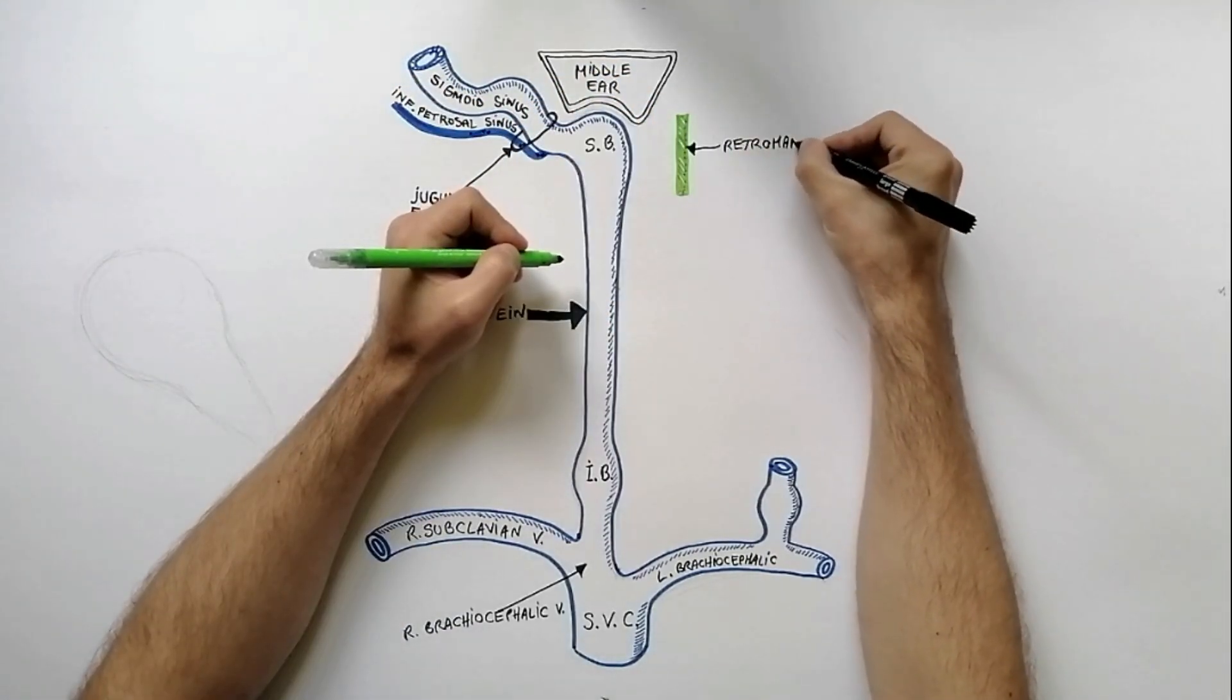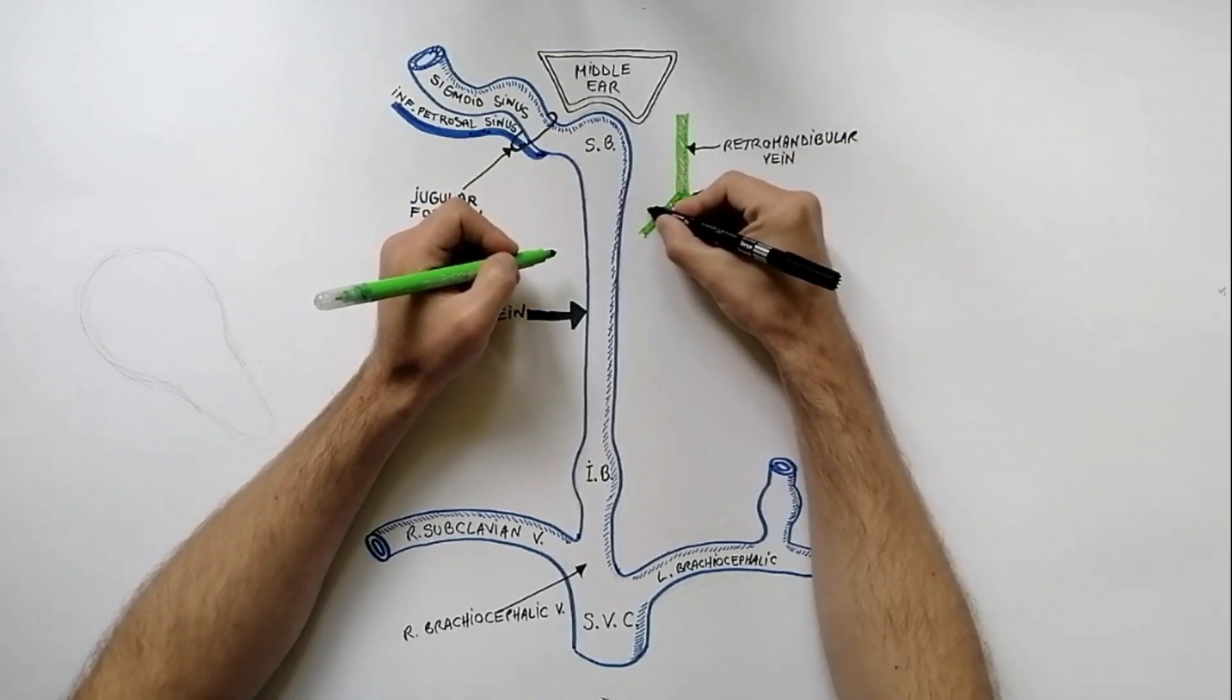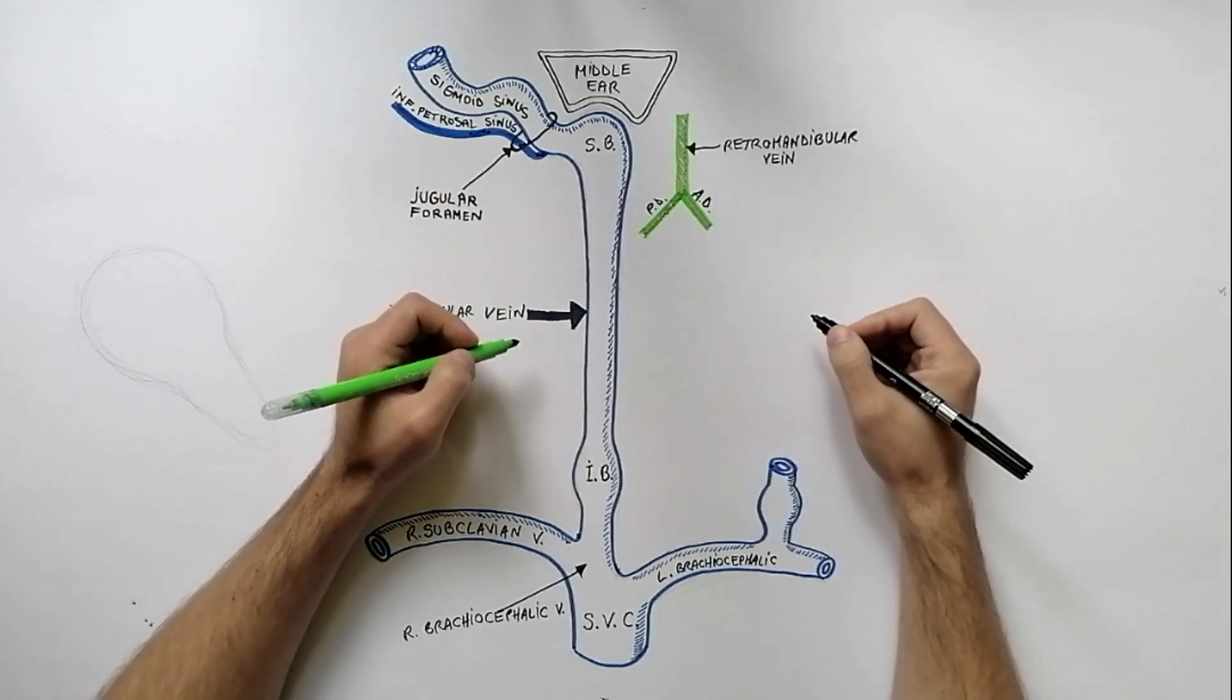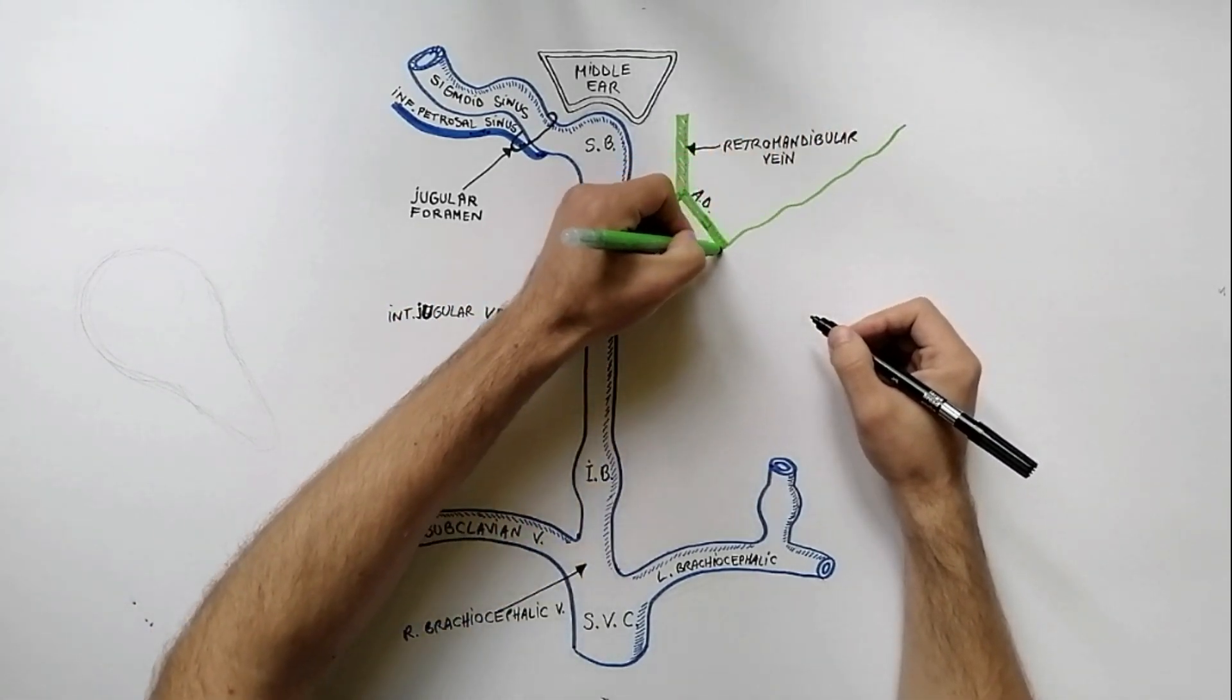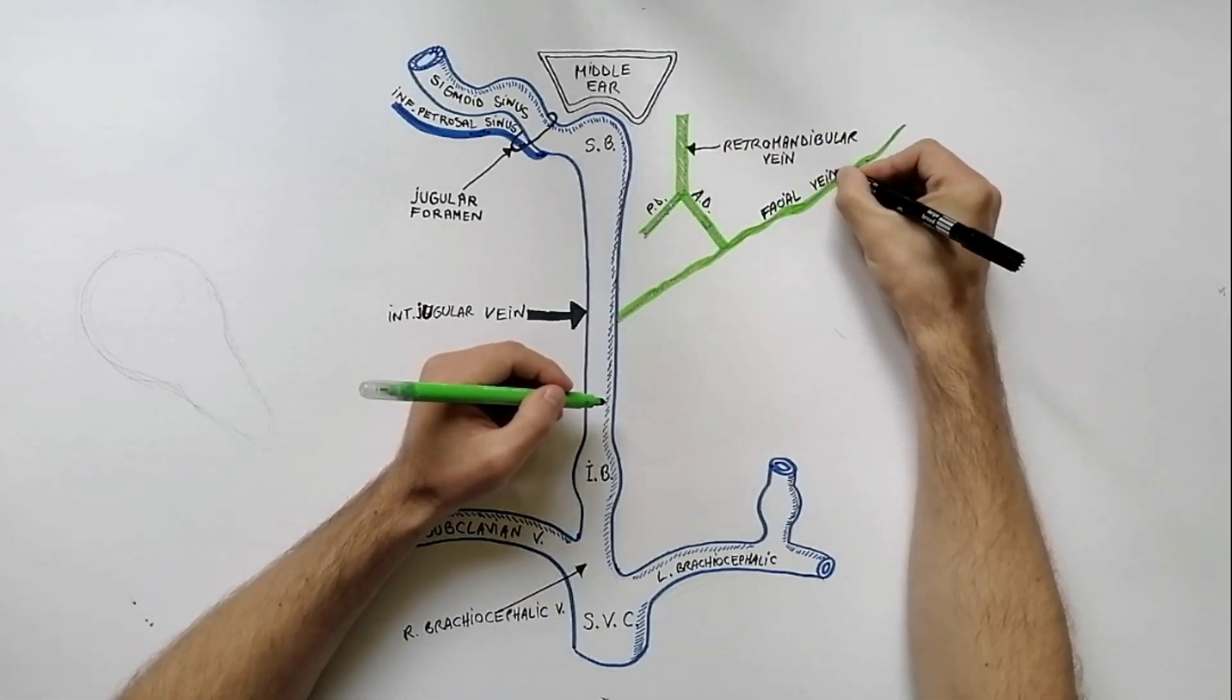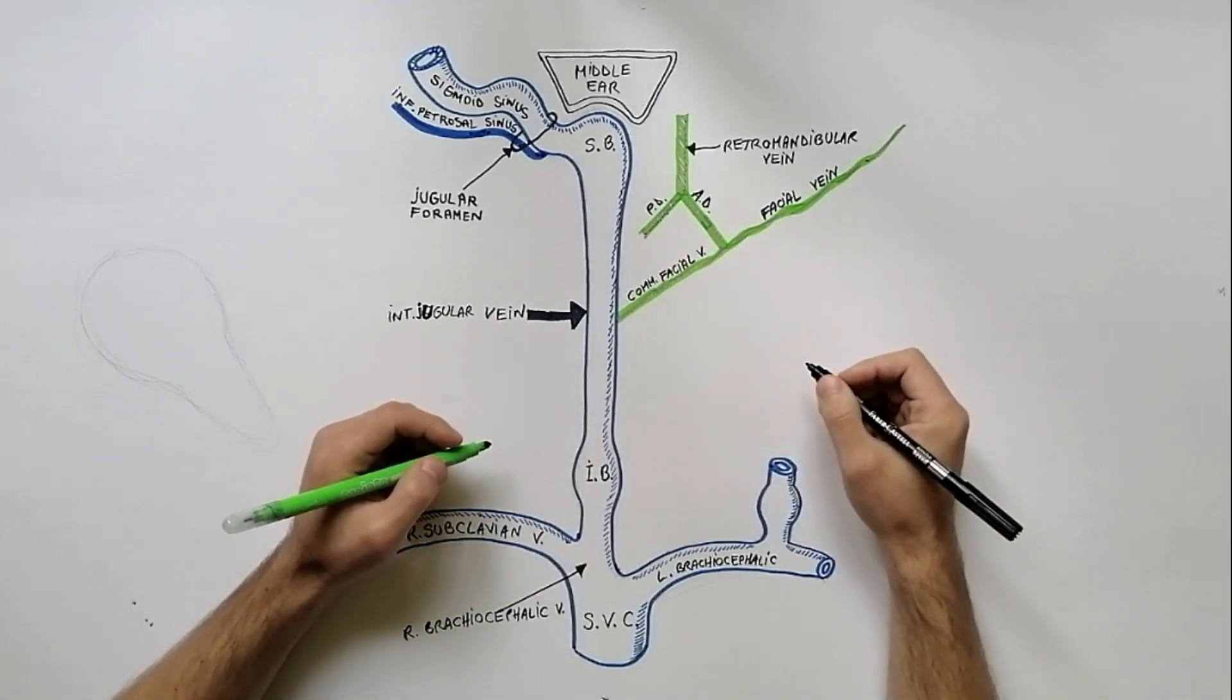The retromandibular vein terminates by dividing into an anterior and posterior division. The anterior division of retromandibular vein unites with the facial vein to form the common facial vein which drains into the internal jugular vein.